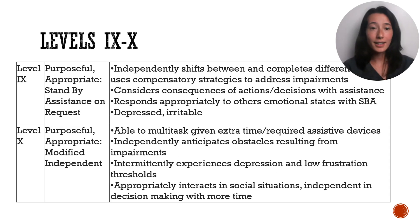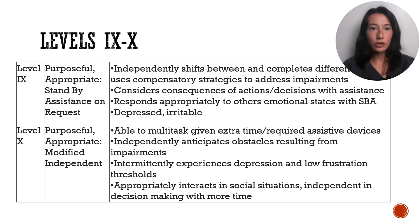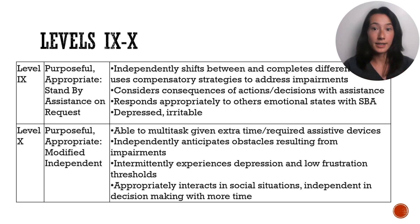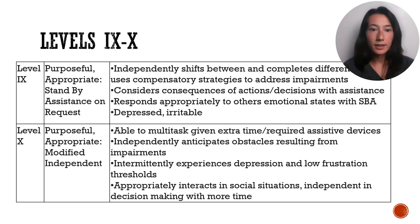Level 9 and 10 — this is where the revised part of the Rancho Los Amigos Scale comes into play. Level 9: the patient is able to shift between different tasks; however, they do need strategies to compensate overall with things like decision-making and overcoming obstacles. They still need assistance to respond appropriately. Level 10: multitasking begins to become a possibility. The patient overall is just more independent in social settings, decision-making, and overcoming obstacles.